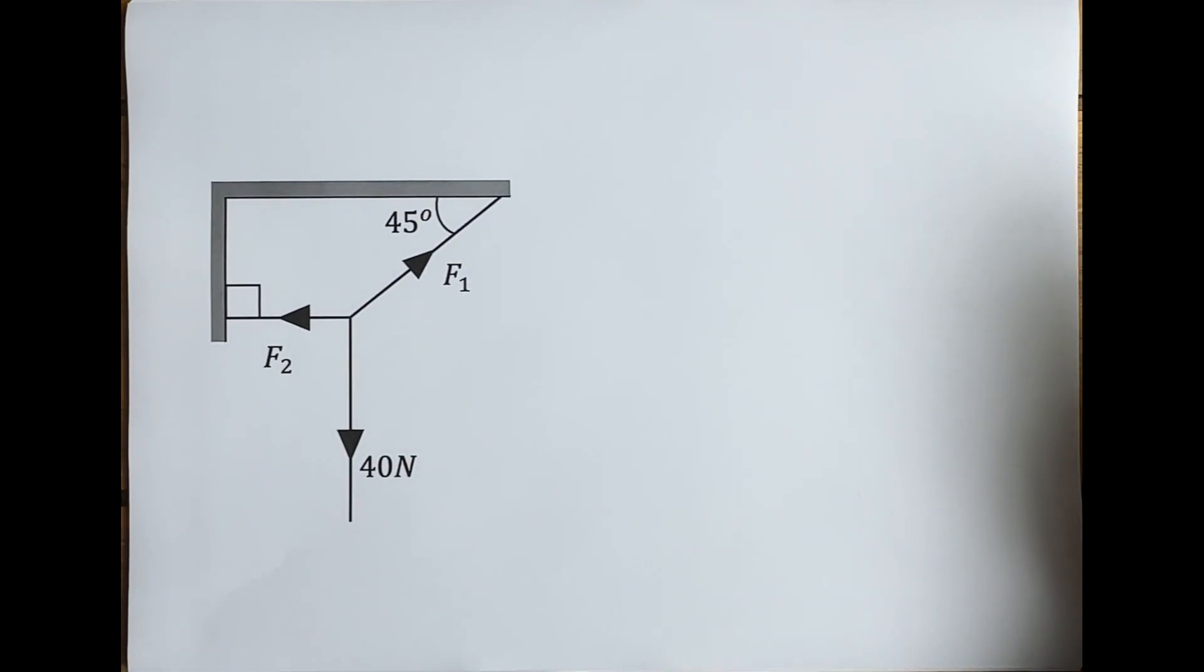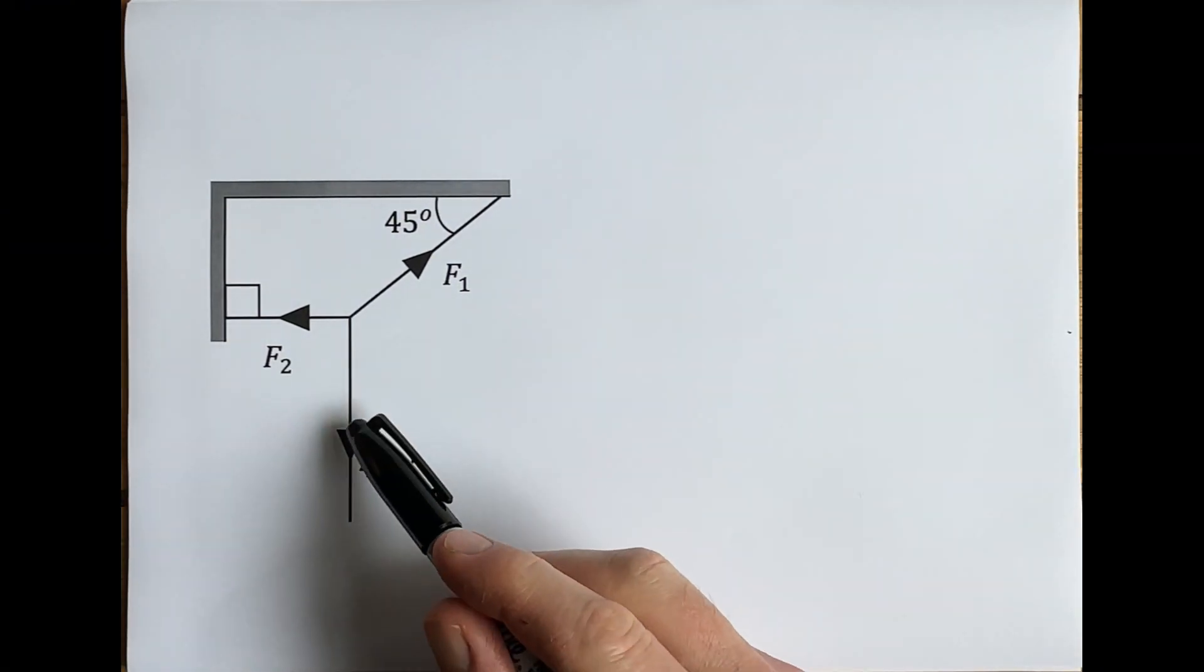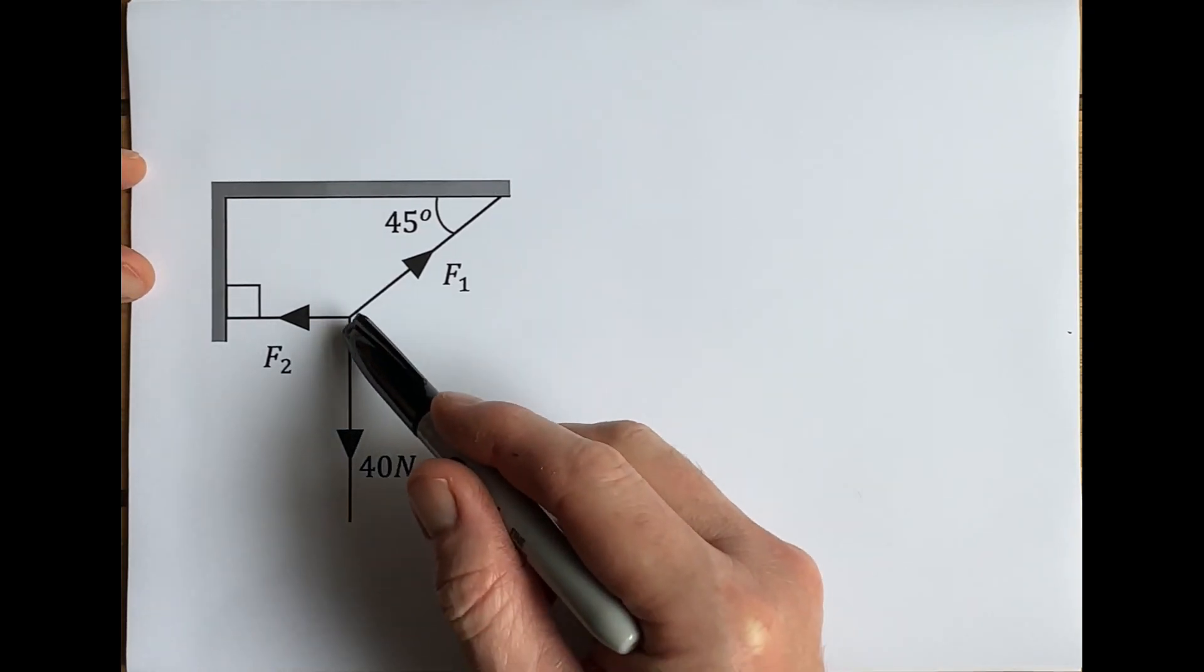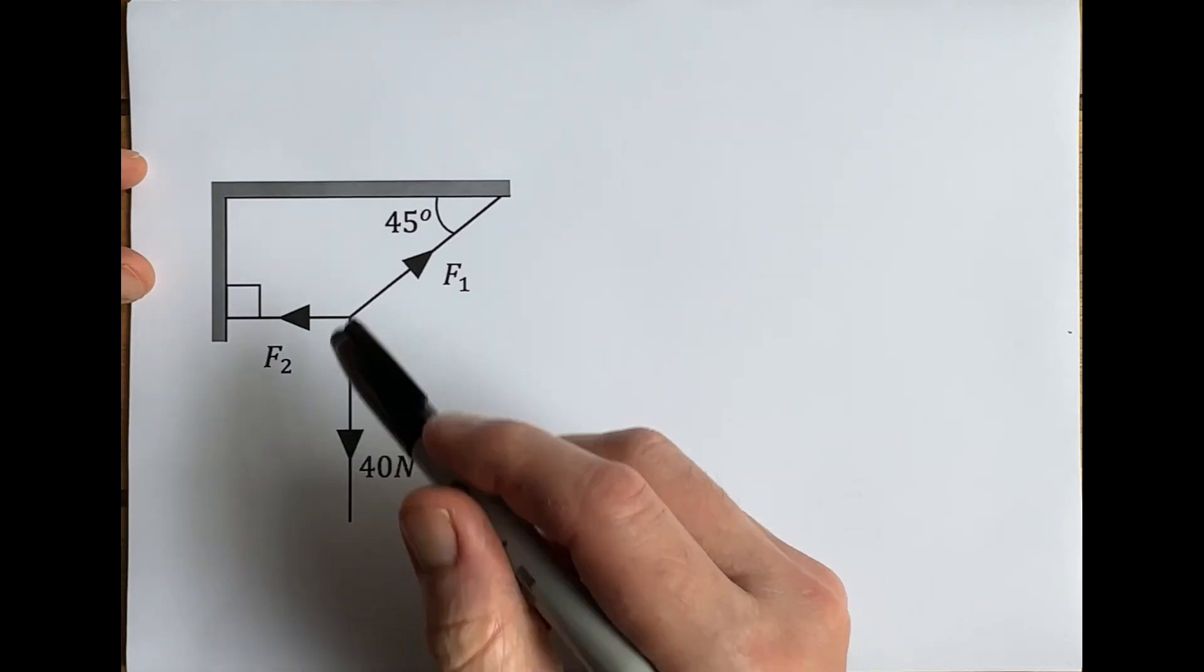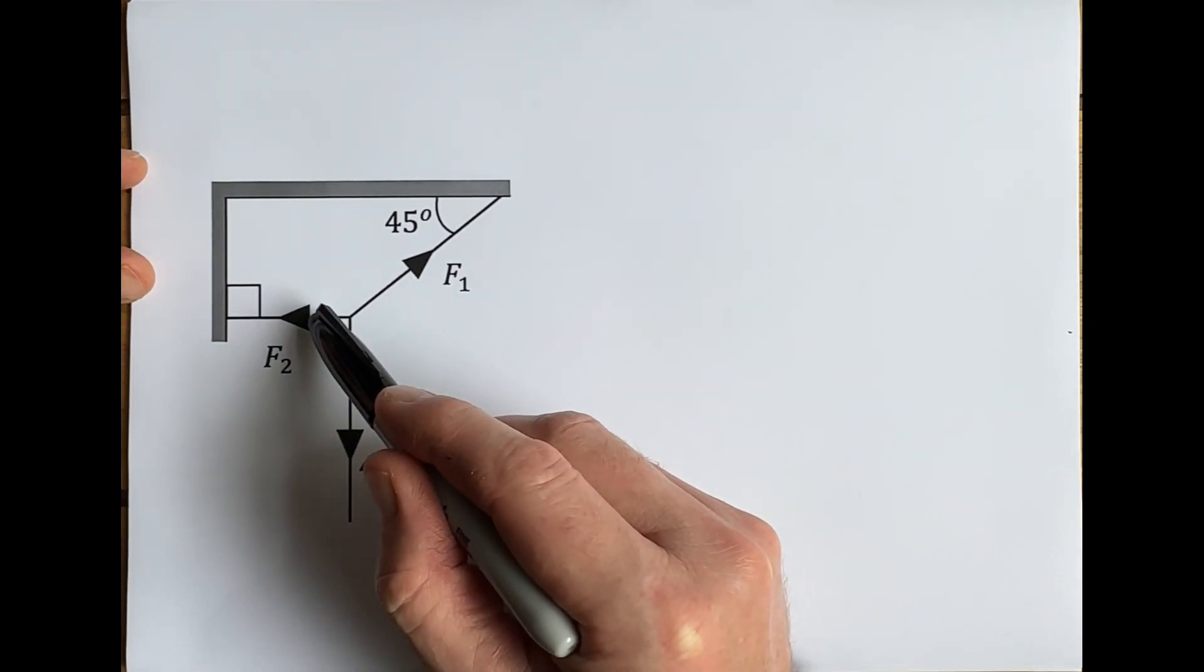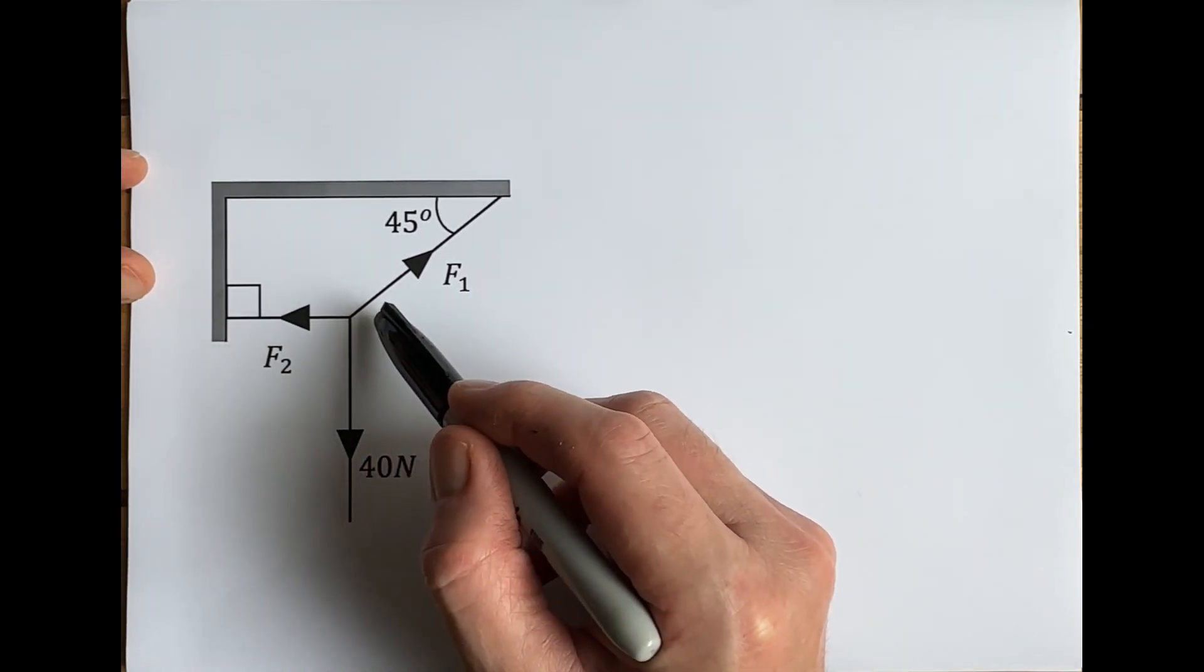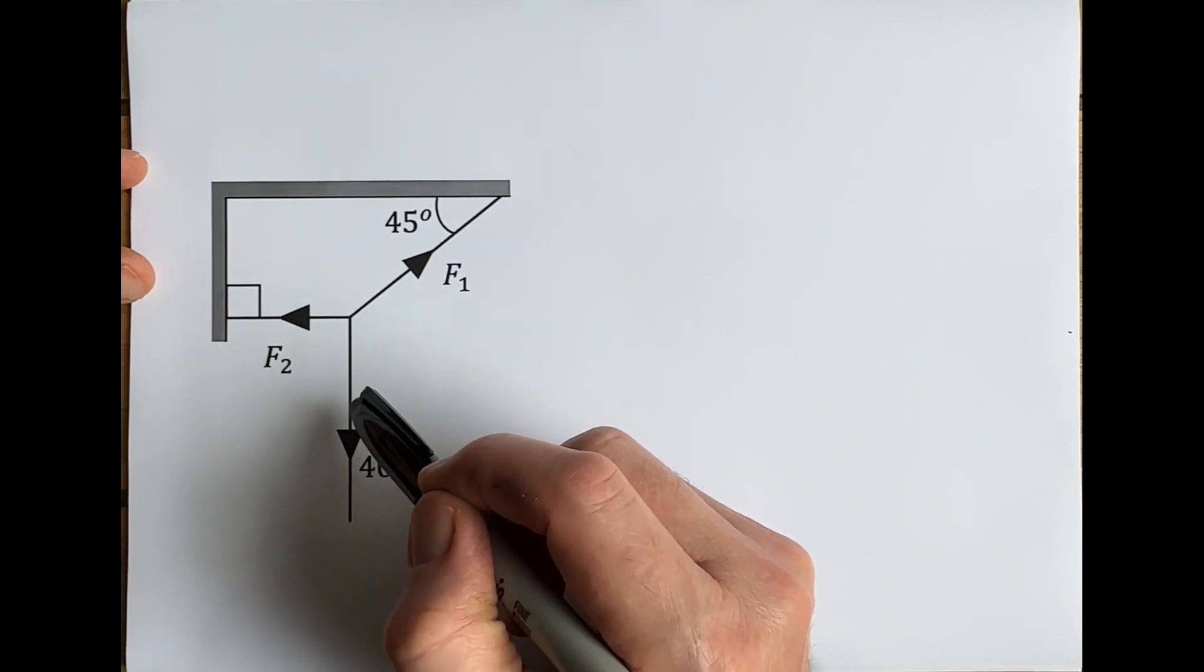So here we have a statics problem, and what that means is we've got a number of forces. We've got this 40 newton force hanging downwards, so presumably this is some kind of weight hanging, and then we've got a couple of cables here that are holding it in place.